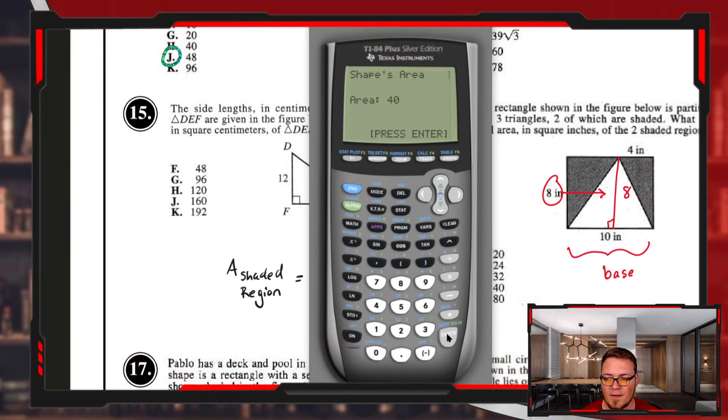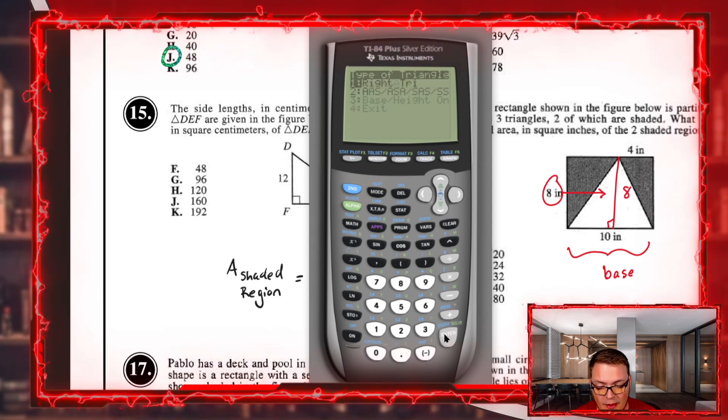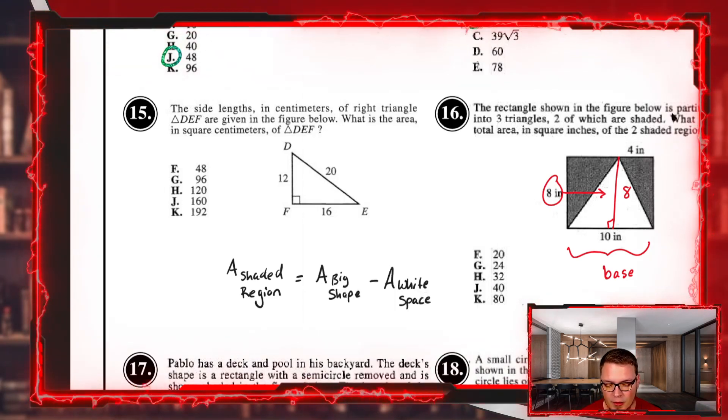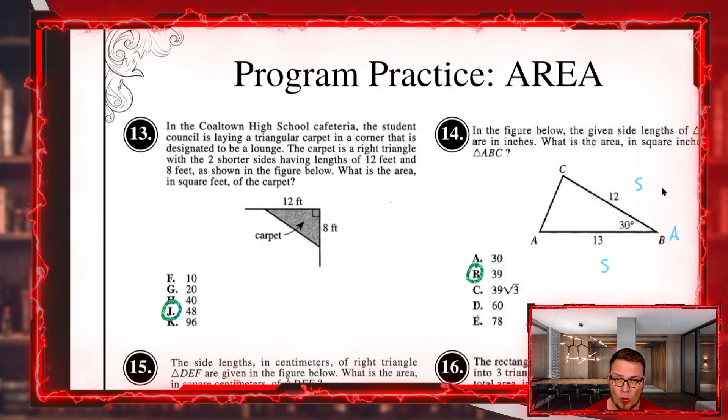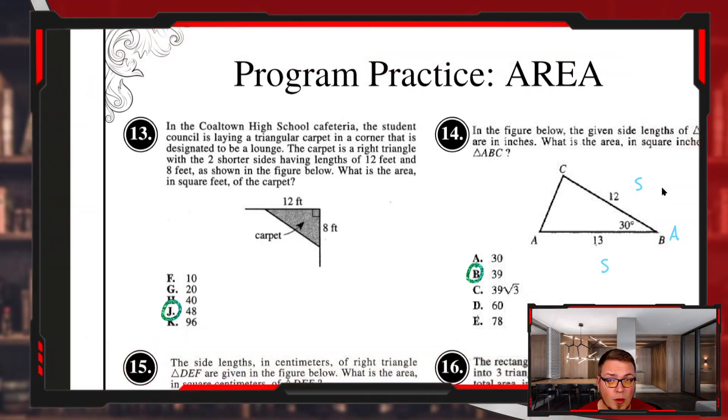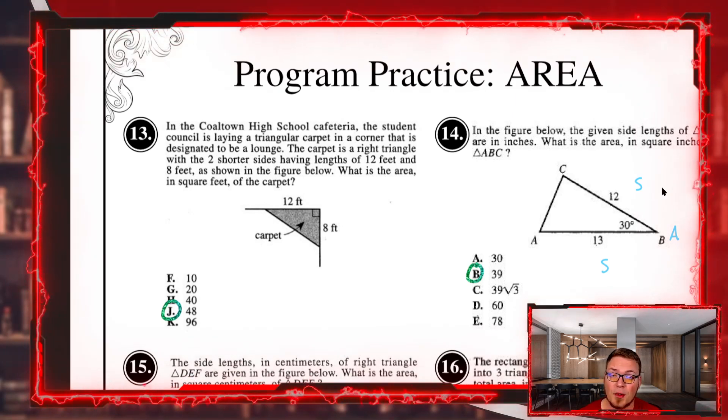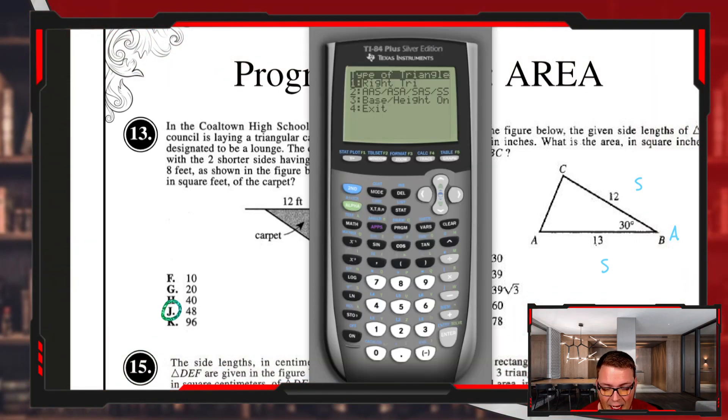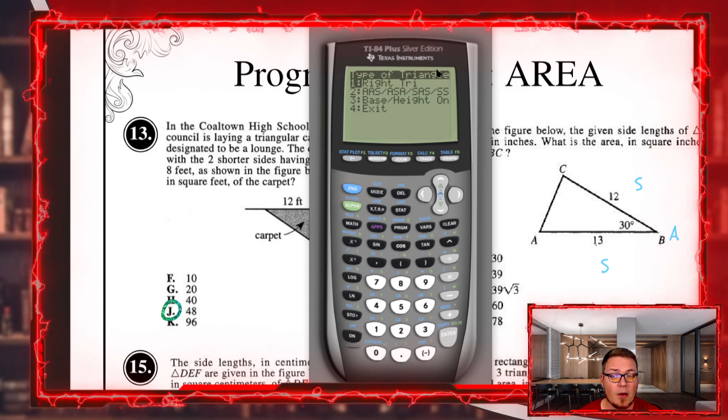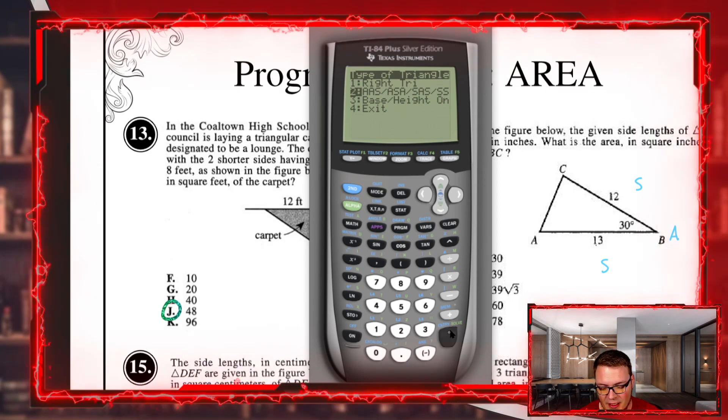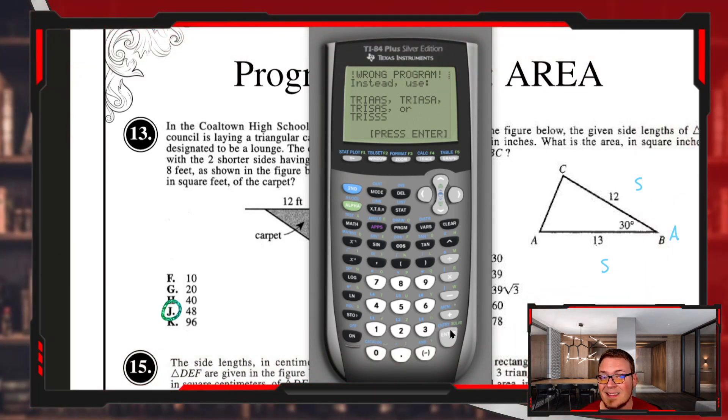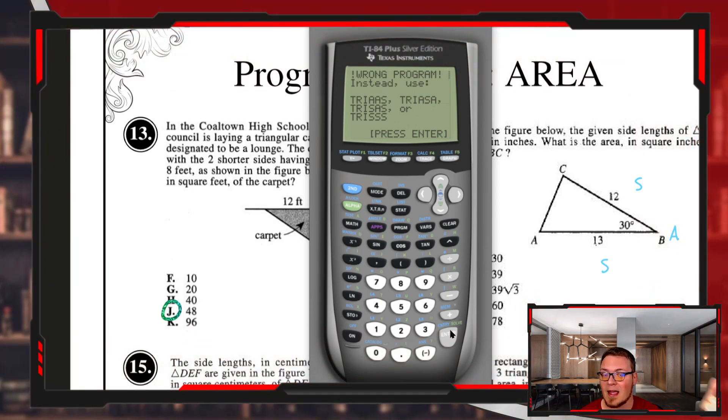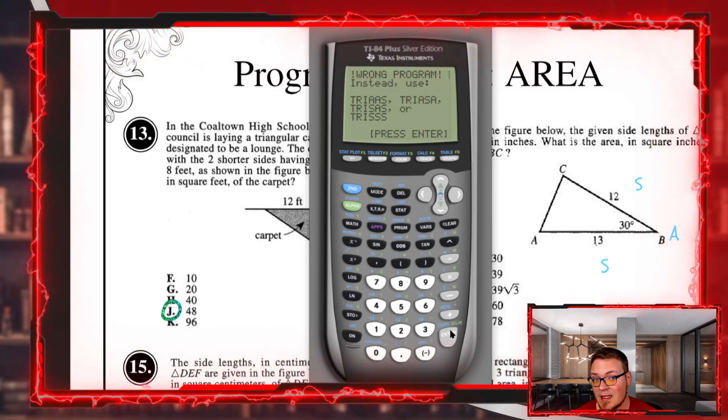The last thing from the area tri program is the area of a weird triangle. A good example is number 14. In this example, they've given us side 12, angle 30, and side 13. You might remember from geometry this is a side-angle-side triangle. For a side-angle-side triangle, if you choose the second option in area tri, you'll get a wrong program note. This program does not find the areas of those shapes.